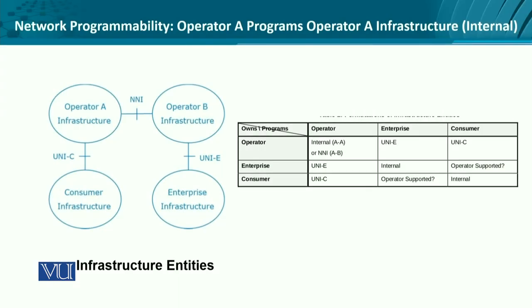Visually, we could look at it as: we have operator A and operator B. These are connected through a network-to-network interface. Then we have operator A connected to the consumer through the user-to-network interface, and the user-to-network interface for the enterprise. Operator A and B are connected through the network-to-network interface.